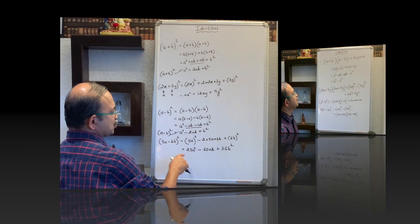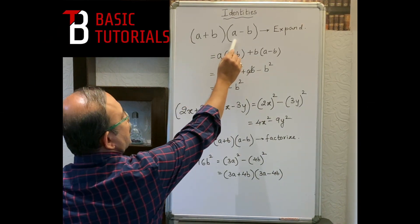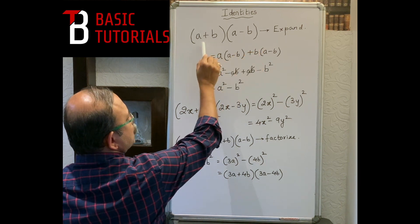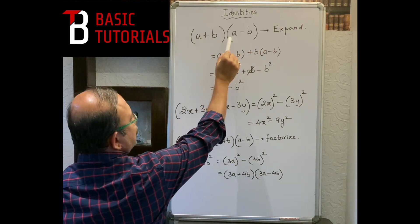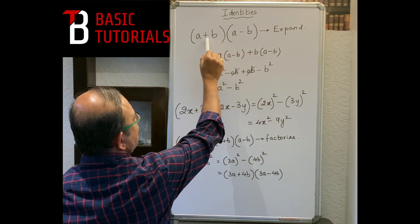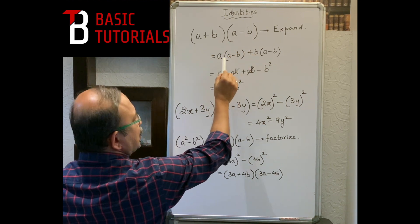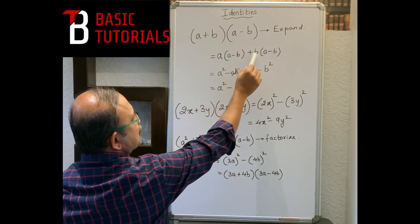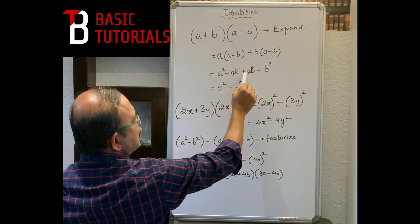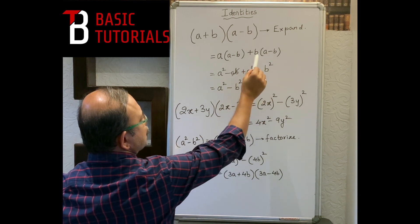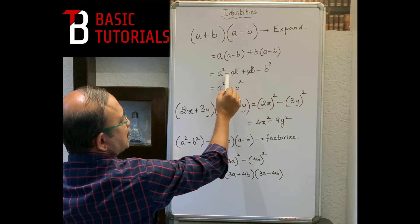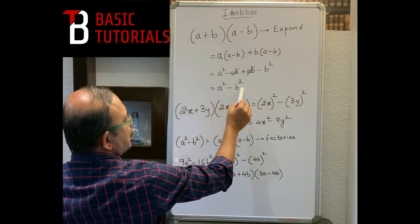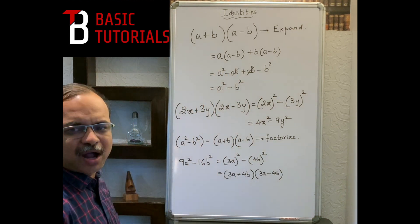Next identity: (a+b)(a-b). To expand, a gets multiplied with the whole bracket and b gets multiplied with the whole bracket. So: a×a = a², a×(-b) = -ab, b×a = +ab, b×(-b) = -b². Since -ab and +ab cancel each other, we get a² - b².